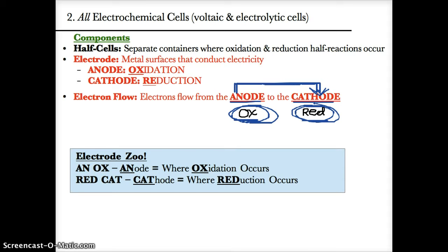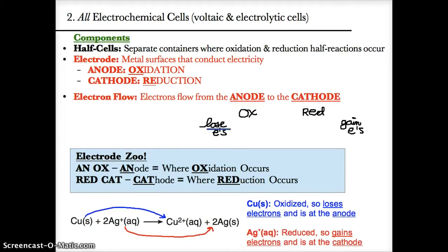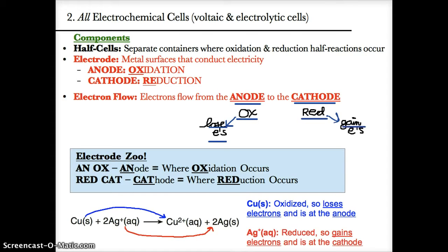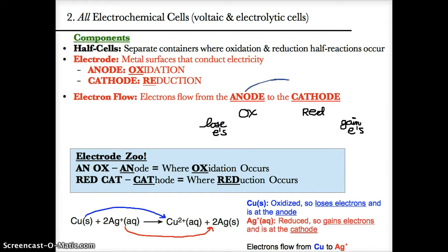This makes sense because at the anode, where the species is oxidized, electrons are lost — so that's where electrons start. At the cathode, where the species is reduced, electrons are gained — so that's where electrons wind up. Electrons always flow from the anode to the cathode.